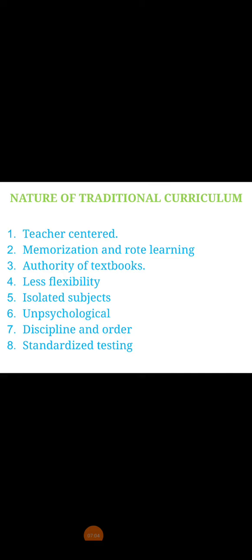Traditional curriculum is less flexible. Flexibility should be one of the most important characteristics of curriculum — as society changes, the needs and demands of curriculum should also change. But traditional curriculum is very rigid, without taking into consideration the social or cultural background of children. The subjects taught in traditional curriculum are also isolated. No subject can be taught in isolation; one subject must have a relation with others, but in traditional curriculum subjects were less integrated. When a subject is taught in connection to others, it helps students create a lasting impression and gain broader knowledge.